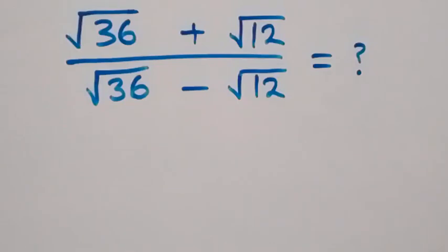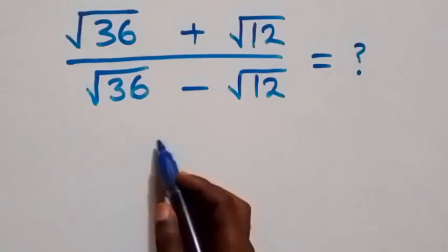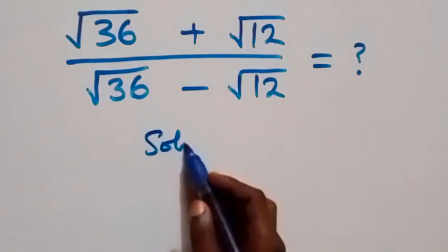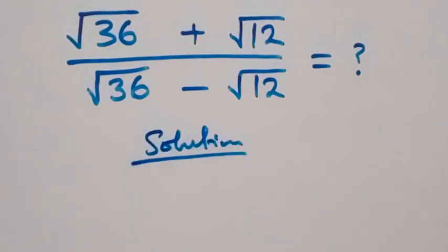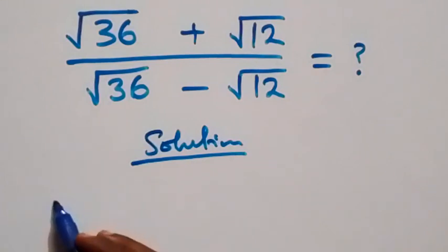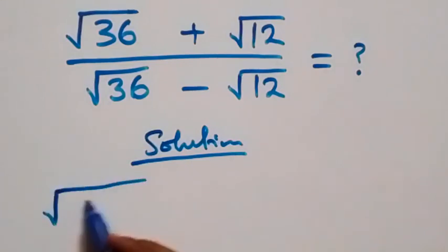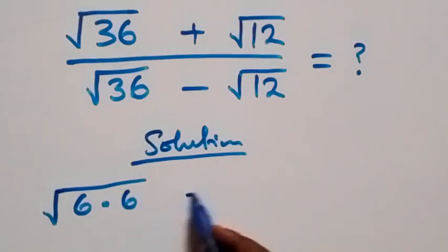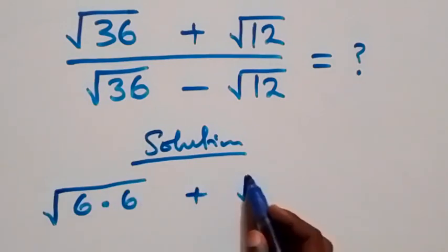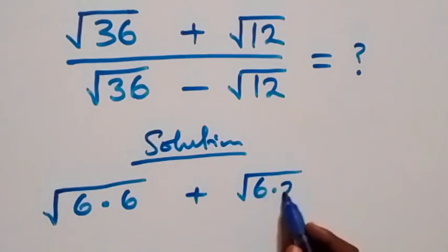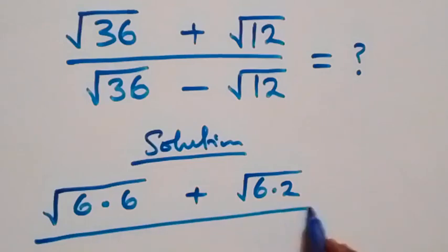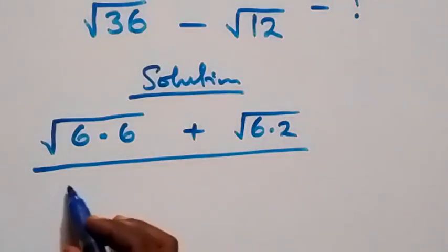Hello, you're welcome. In this video we solve a nice surd problem. For the first method, we can write the expression as root of 6 times 6, plus root of 6 times 2, divided by the same denominator form.